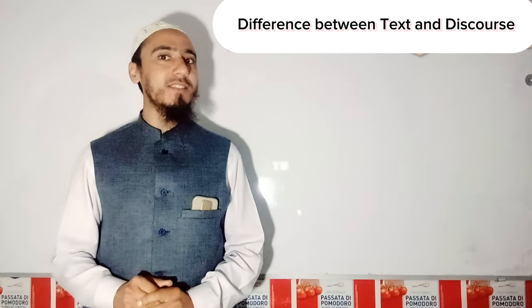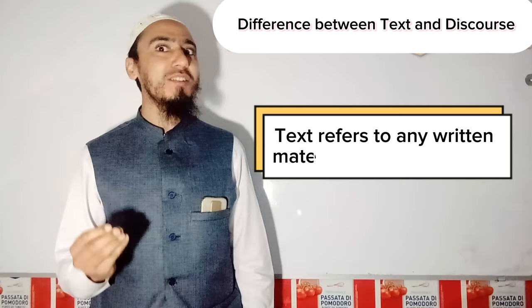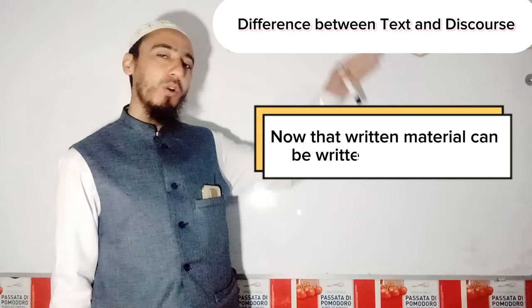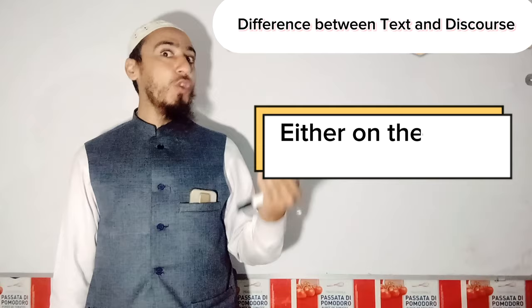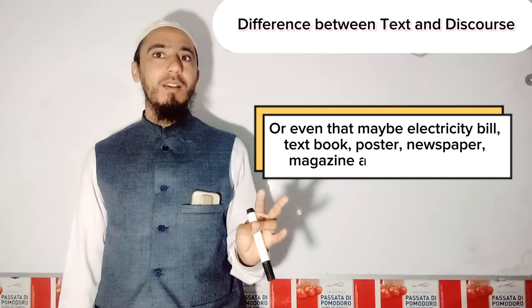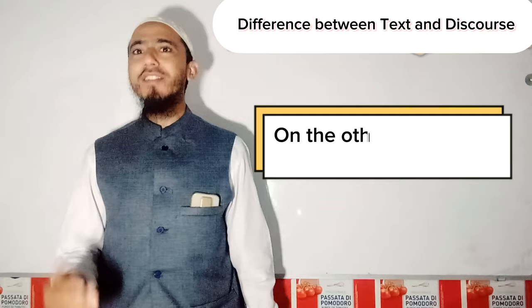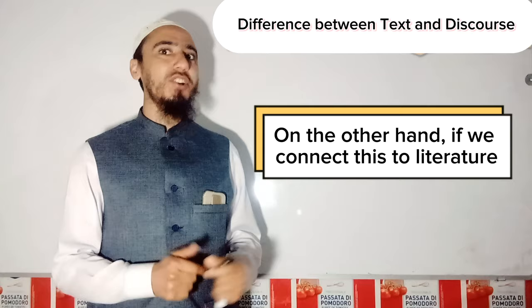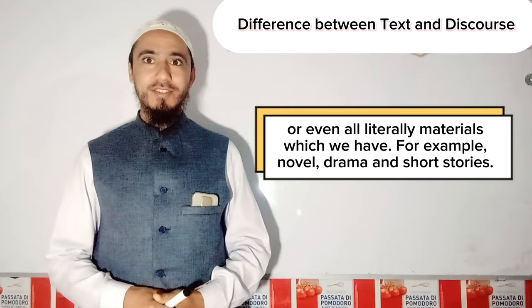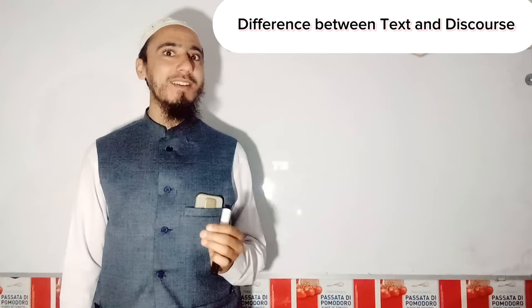Whenever we are talking about text, text refers to any written material that can be read. That written material can be written on the board, either on the page of a book, or even that may be an electricity bill, textbook, poster, newspaper, or advertisement. On the other hand, if we connect this to literature, even all literary materials — for example, novels, dramas, and short stories — all these are included in the text.